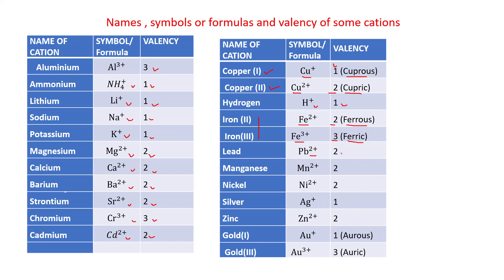Lead: Pb2+, valency is 2. Manganese: Mn2+, valency is 2. Remember, Manganese and Magnesium are different things — Magnesium is Mg2+ and Manganese is Mn2+. Nickel: Ni2+, valency is 2. Silver: Ag+, valency is 1. Zinc: Zn2+, valency is 2.